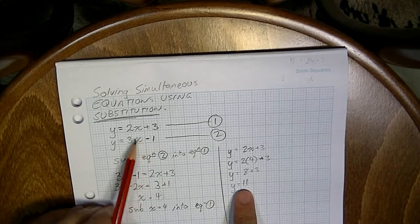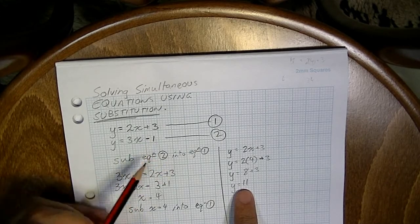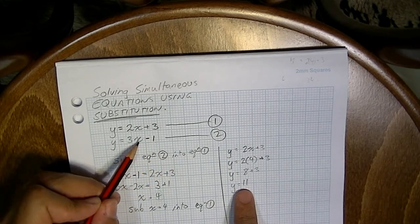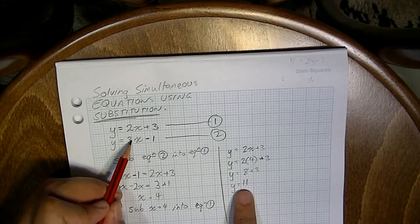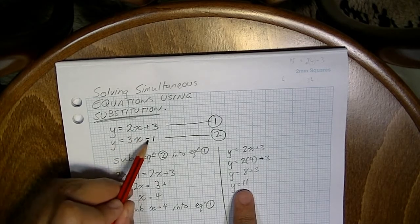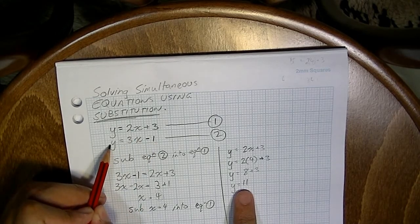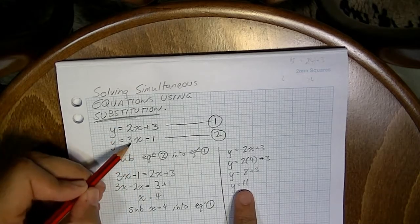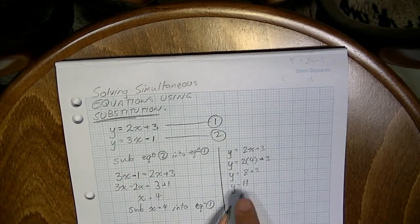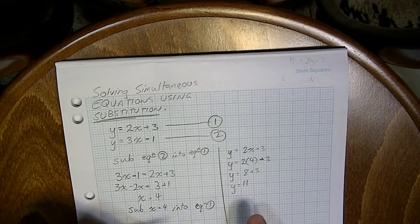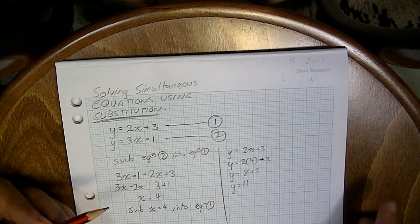Now, if you take a look at equation 2, we should find that that's also true. When x is equal to 4, y is equal to 11. 3 times 4, that'll be 12. Minus 1, that'll be 11. So in equation 1 and equation 2, when x equals 4, y equals 11. That's our simultaneous solution. That's what a simultaneous solution is.